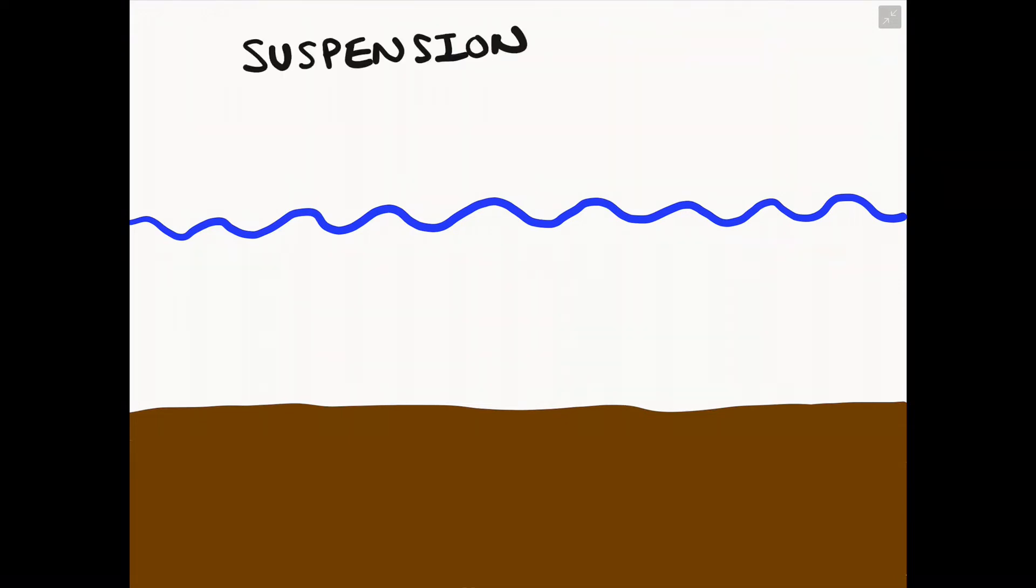The third transportation method is known as suspension. This involves much smaller particles such as grains of sand being suspended or floating in the actual waves and in the sea, or the body of water. Therefore, the movement of this particular type of transportation is just the material floating in suspension within the sea.